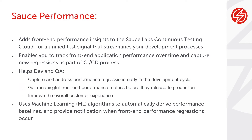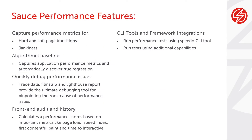This helps developer and QA organizations capture and address performance regressions early in the development cycle, get meaningful front-end performance metrics before you release to production, and improve overall customer experience. Source Performance captures metrics for hard and soft page transitions and jankiness of performance tests, all captured from an algorithmic baseline. You can quickly debug performance issues, use front-end audits and history, and also use Speedo with additional capability — all done via Google Lighthouse.